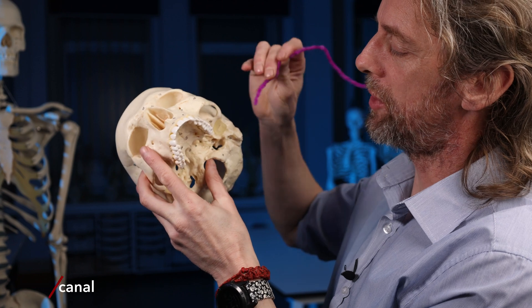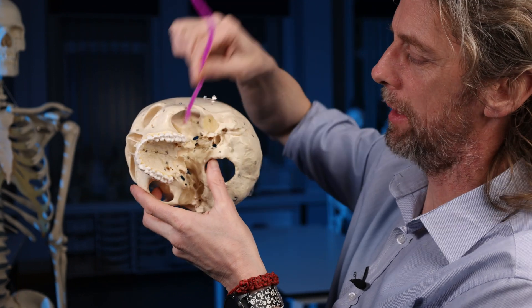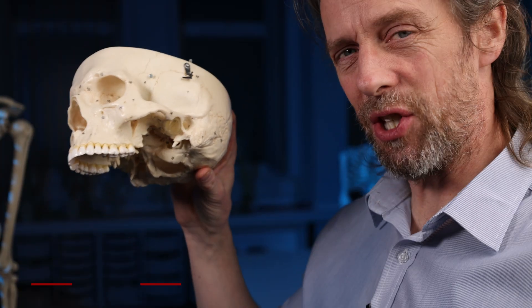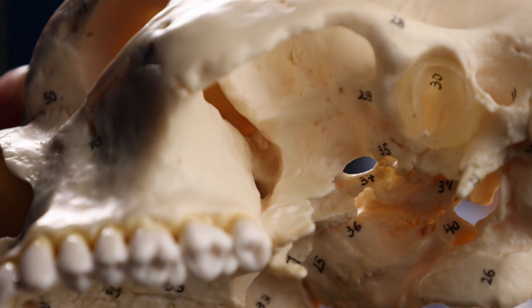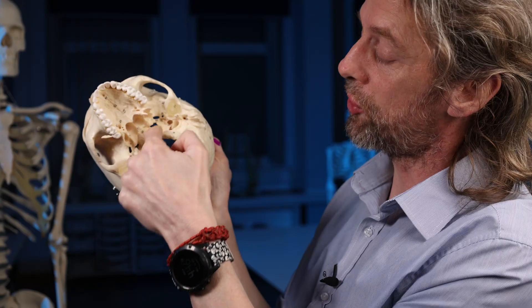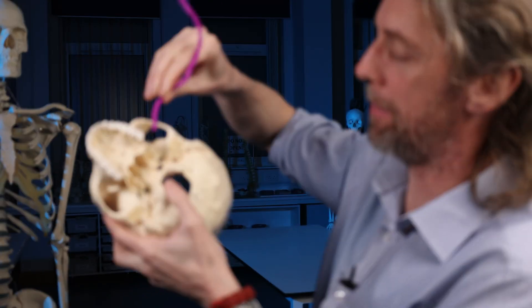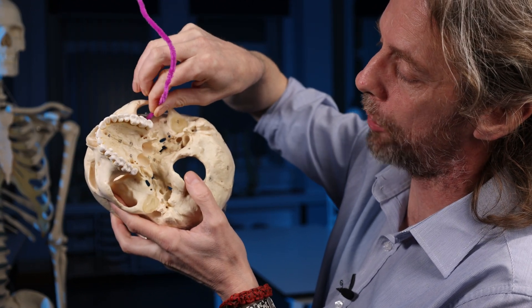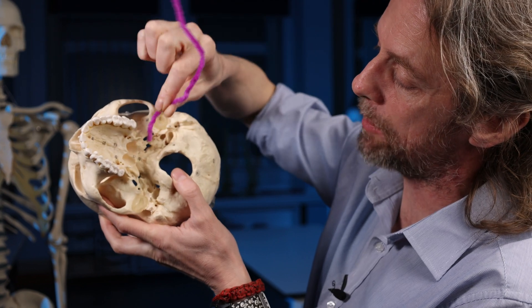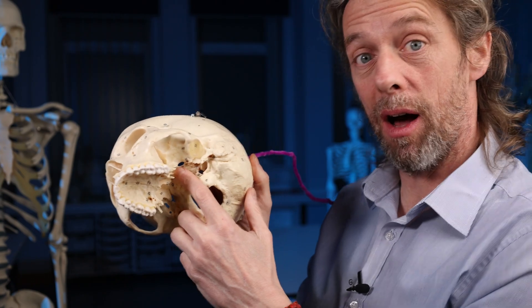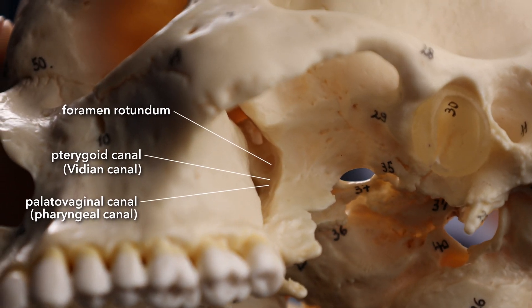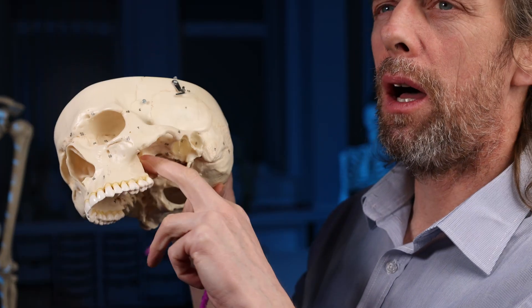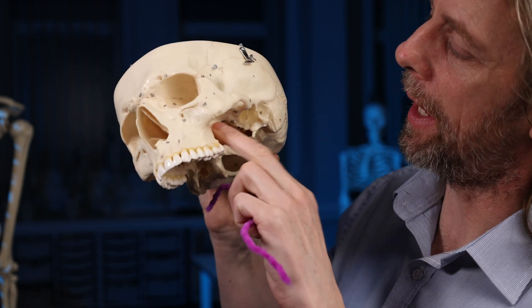There's also a pterygovaginal canal - also called the pharyngeal canal - which links the pterygopalatine fossa to the superior part of the nasopharynx. It's a small canal running from the pterygopalatine fossa through the bony bits to pop out there, carrying the pharyngeal branch of the maxillary nerve and the pharyngeal branch of the maxillary artery. You're more likely to see this on CT images when your anatomy is really good than on a real skull.